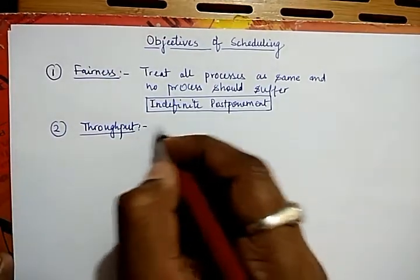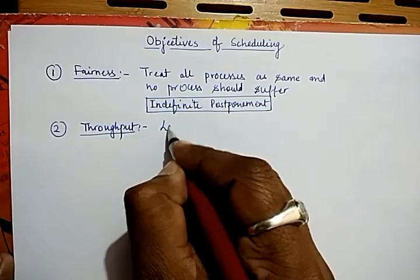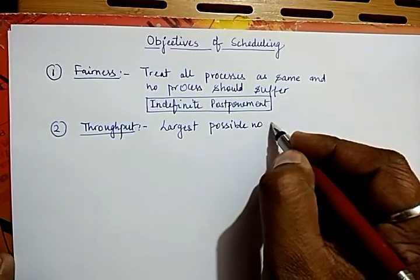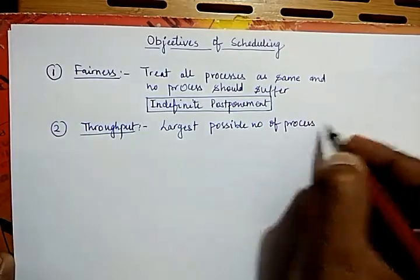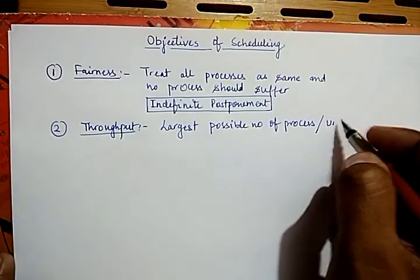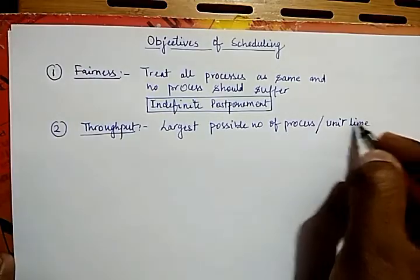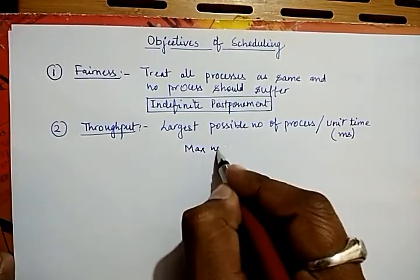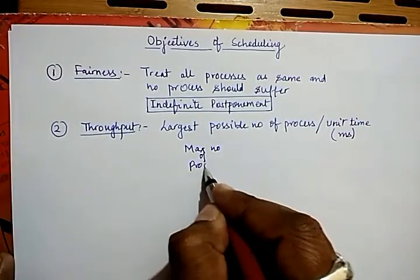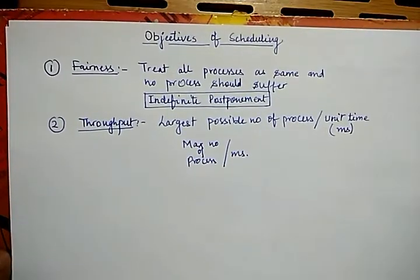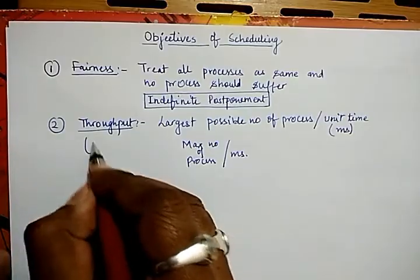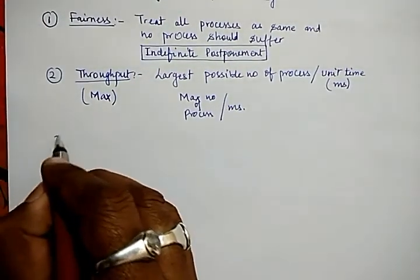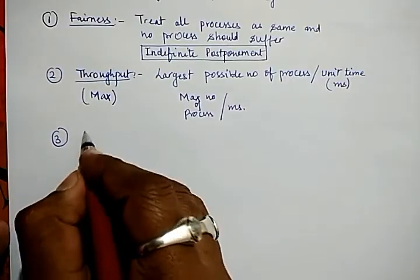Throughput means the scheduling algorithm must attempt the largest possible number of processes per unit of time. In general it is considered in milliseconds — so the max number of processes per ms. For a scheduling algorithm, the throughput must be maximum, so the objective is to maximize the throughput.